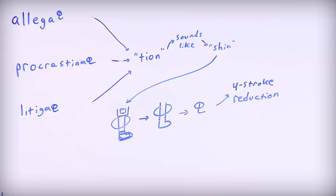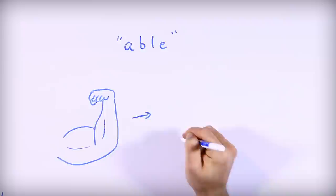If you want to do another example, let's take the suffix "able". When I think of "able", I think of somebody who is strong and able to do things, so let's take a big beefy arm, draw that, and then simplify that once again, and now we have yet another two-stroke symbol.